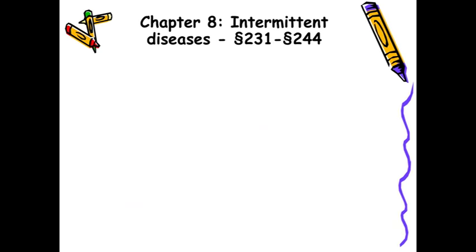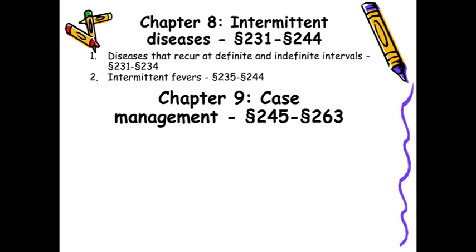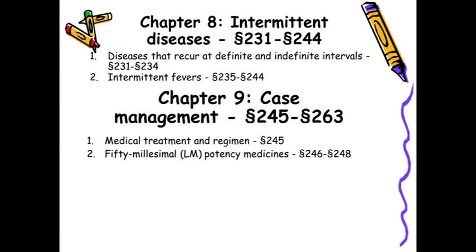Intermittent diseases: aphorisms 231 to 244 — diseases which recur at definite and indefinite intervals are described here, aphorisms 231 to 234. Then intermittent fevers have been described. After mental diseases, the ninth chapter is case management, where nearly 19 aphorisms have been devoted to medical treatment and regimen — that is the way of life, lifestyle.